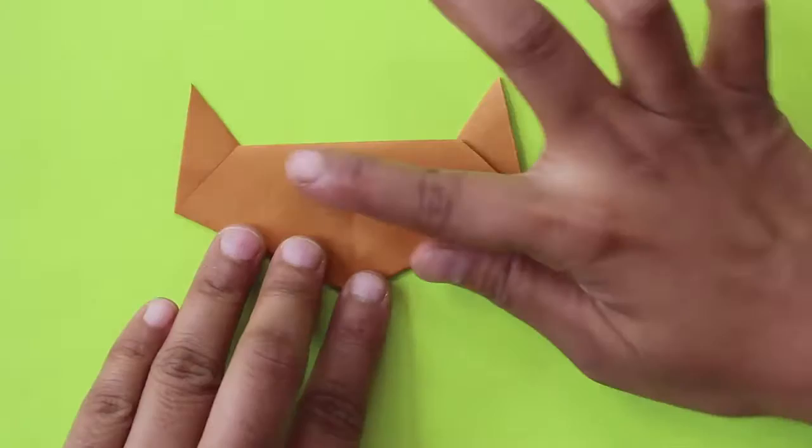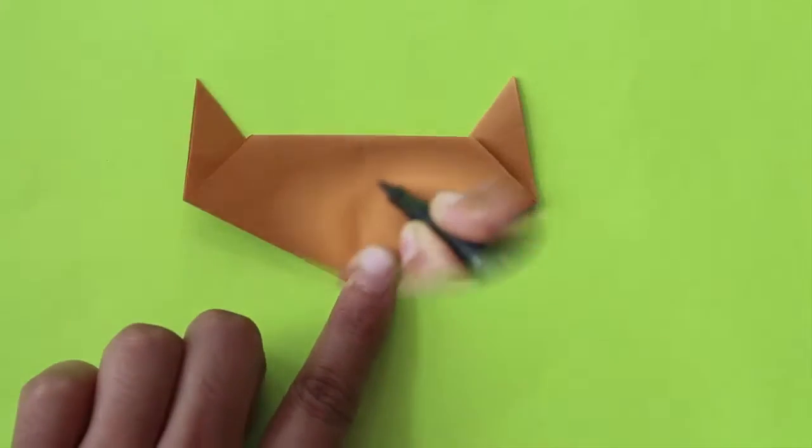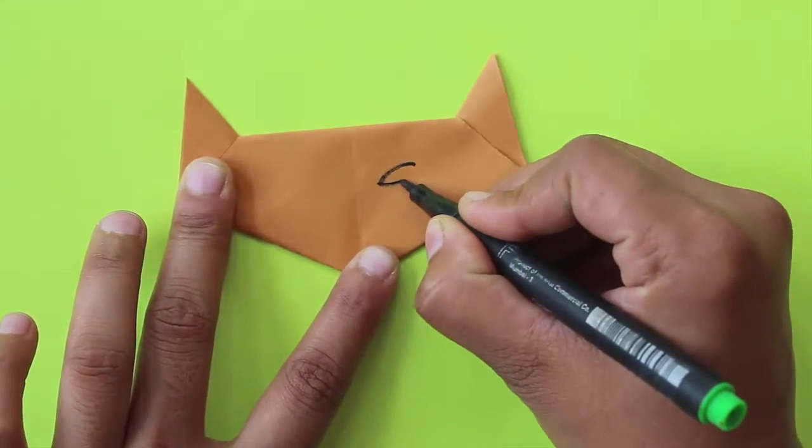On reversing the model, you will see a cat with two short ears popping up.